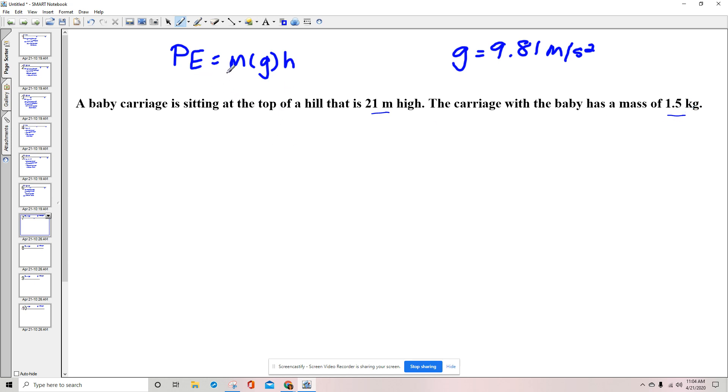The equation that we use for potential energy is mass times gravitational constant times the height. So the potential energy equals the mass, which is 1.5 kilograms, times the gravitational constant, which is 9.81 meters per second squared, times the height, which is 21 meters.